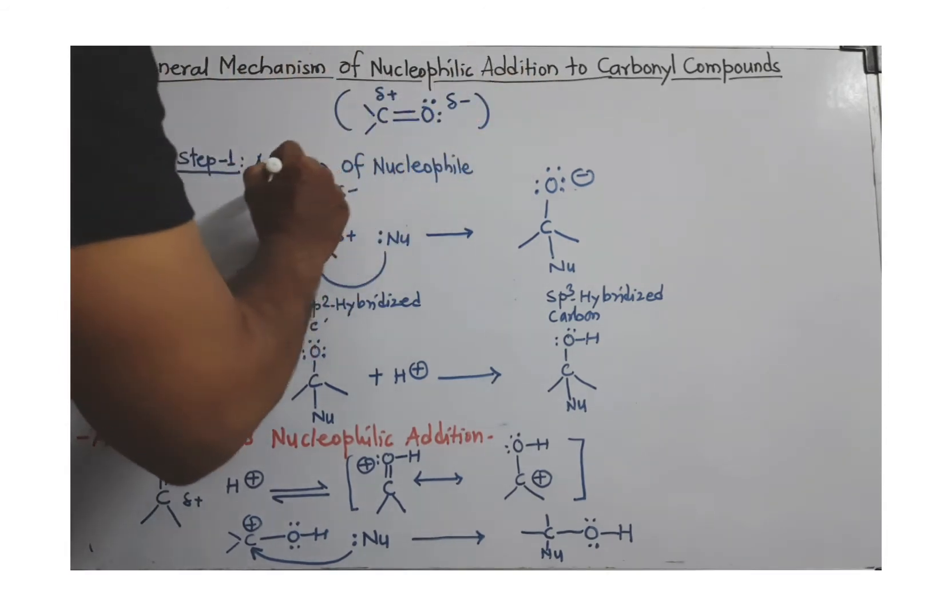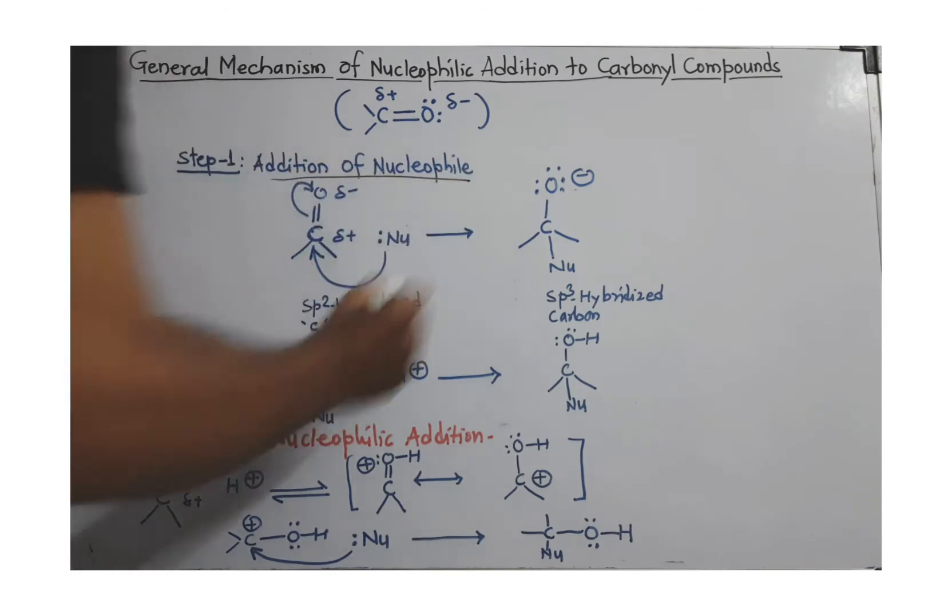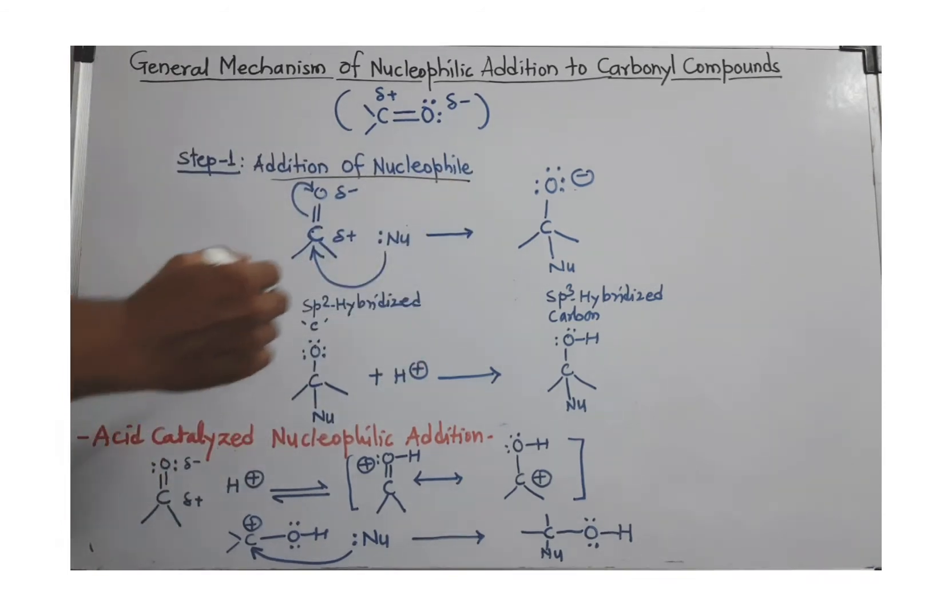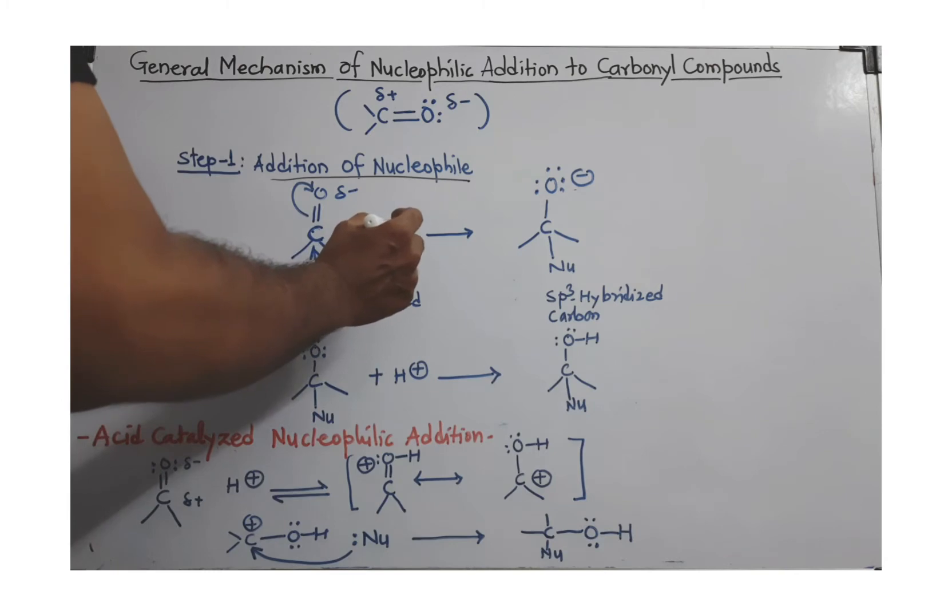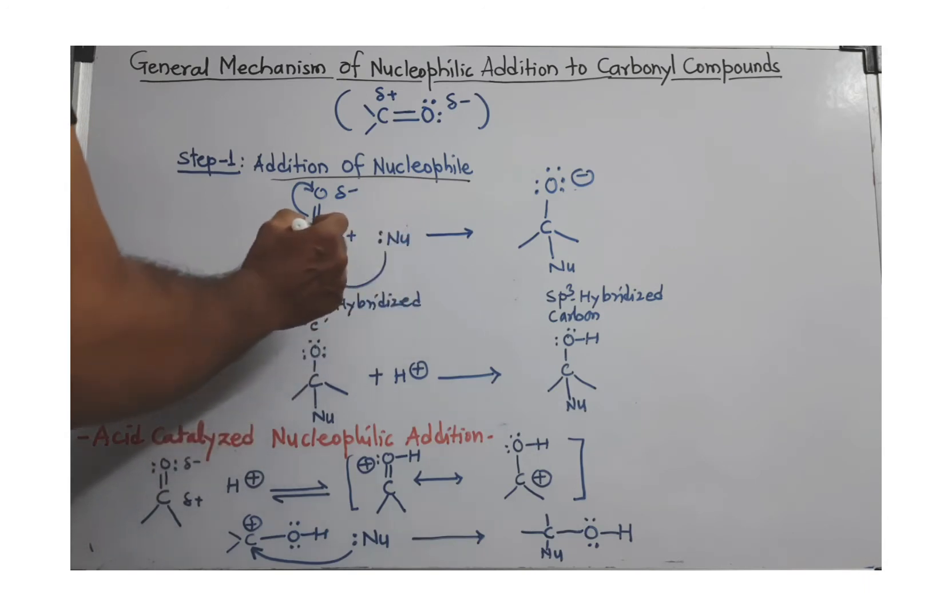First step is addition of nucleophile. Nucleophile means what? Electron-rich species with or without negative charge. This nucleophile has a lone pair of electrons and will go to the carbonyl carbon which is electron deficient.